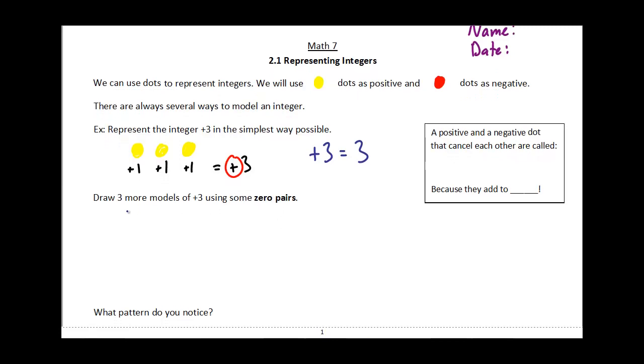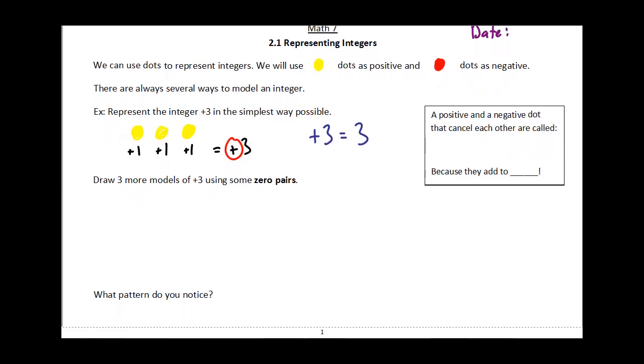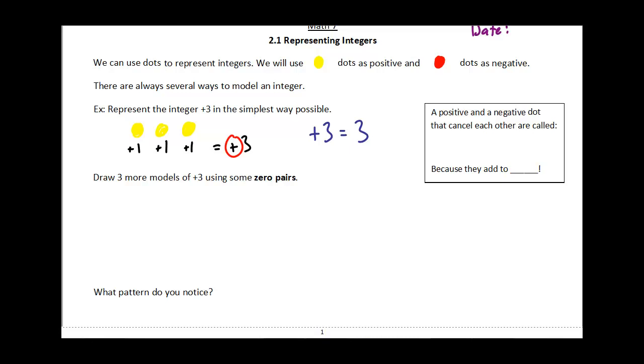Now we have to draw three more models of +3 using zero pairs. The simplest way of showing +3 is just the three yellow dots, but I could have instead drawn four yellow dots. If I leave that alone, that's going to be +4, but if I then add one red dot, you can see what happens here is this +1 and this -1 are going to cancel each other out. And this is what we call a zero pair.